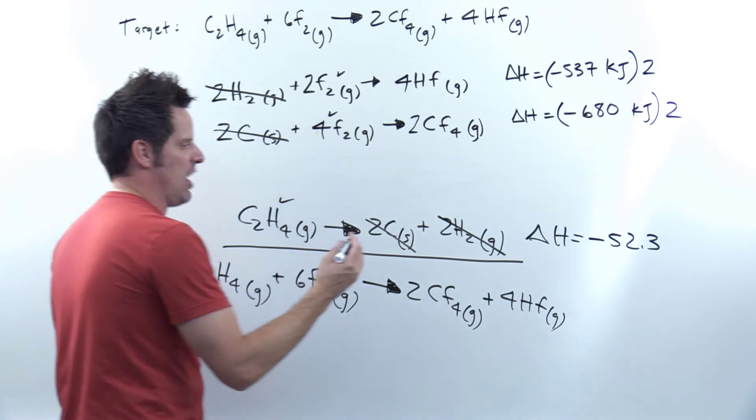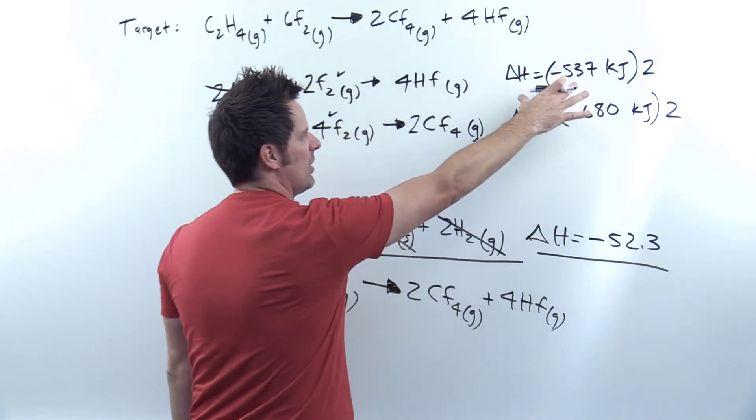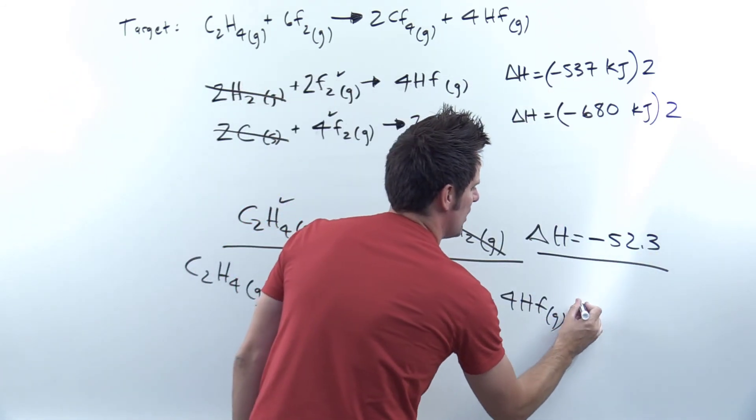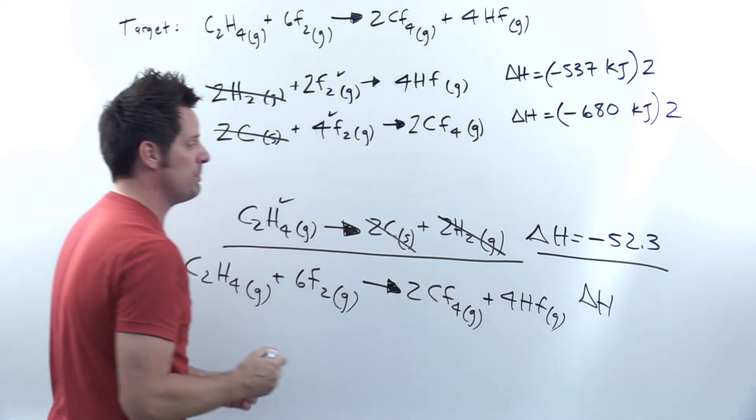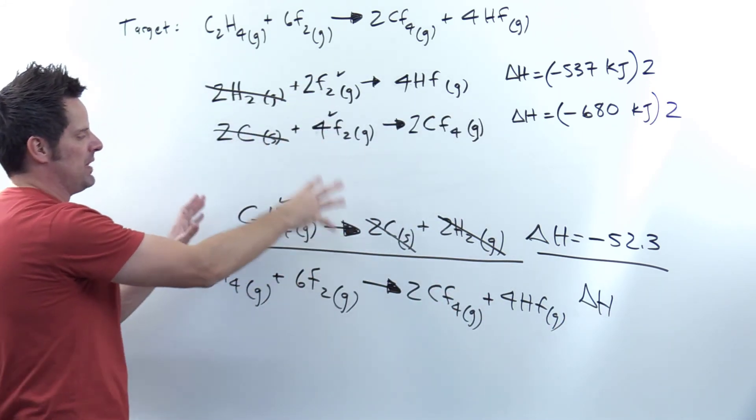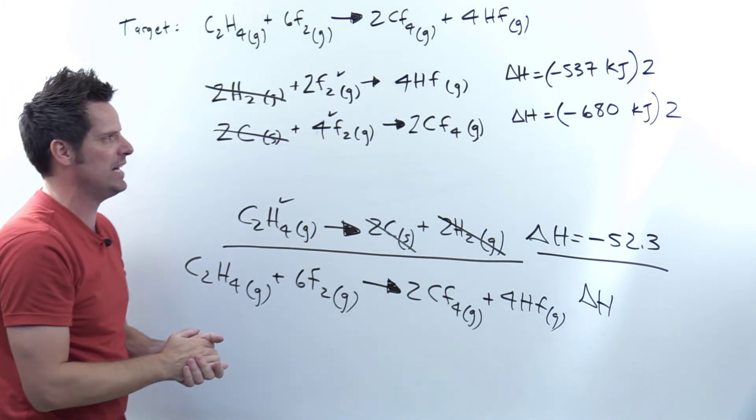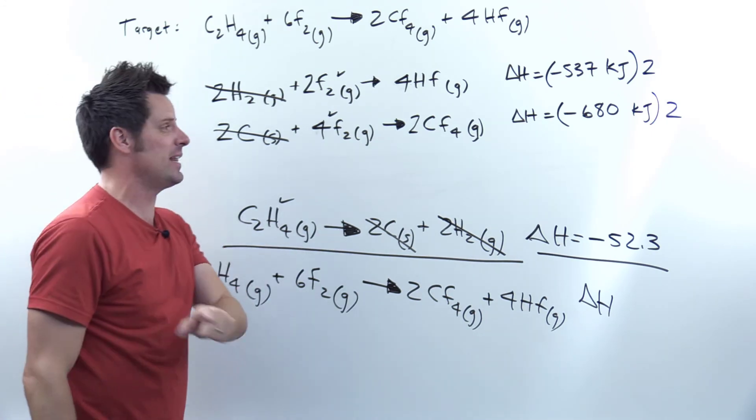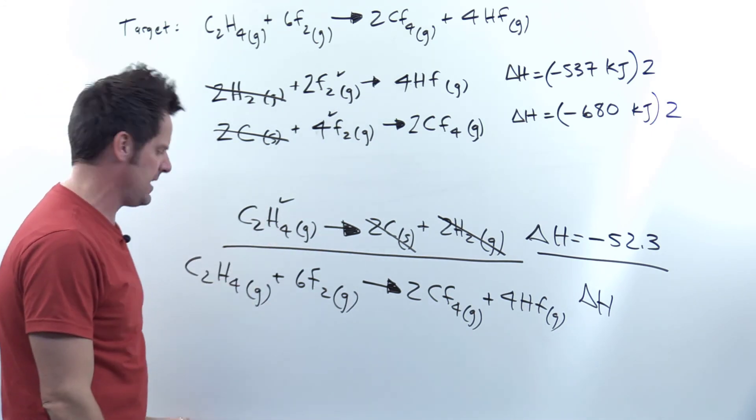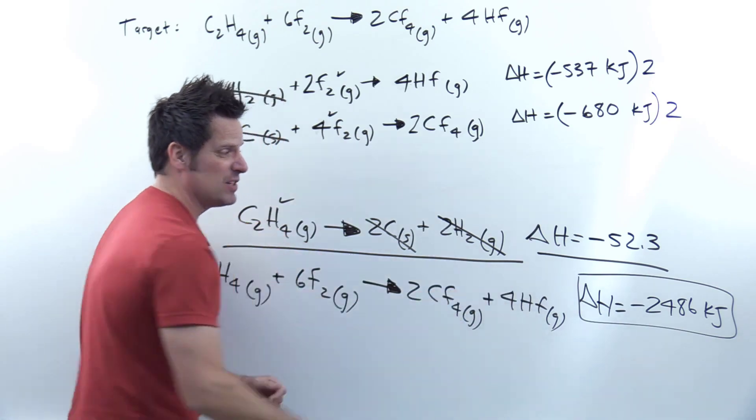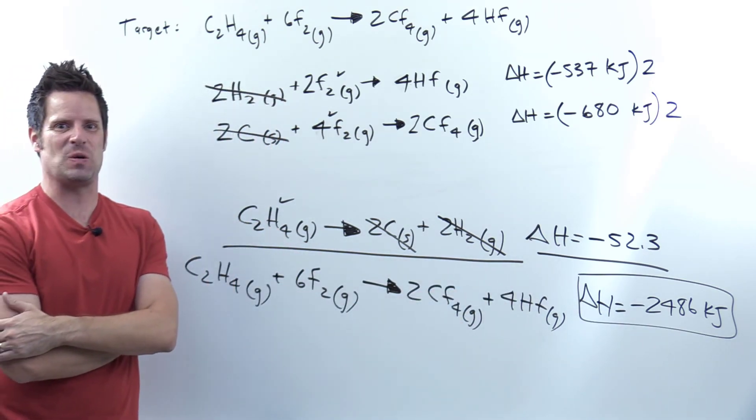Which tells me that all I have to do is add all of these together, and the grand delta H for the overall reaction will be correct because I did manipulate these correctly to arrive at my target equation. Now I'll let you double check on your calculator on your own, but when I did this, I ended up getting an answer of negative 2486 kilojoules.